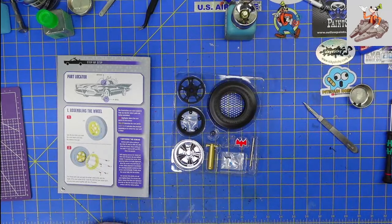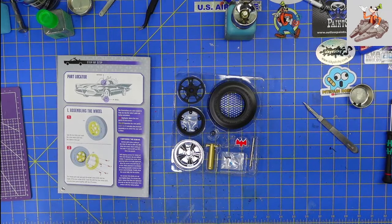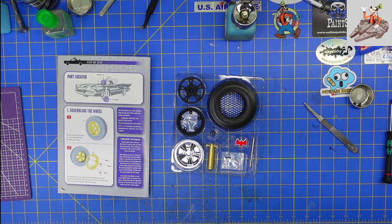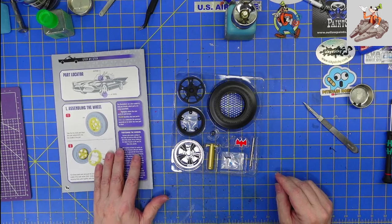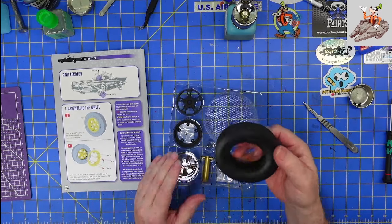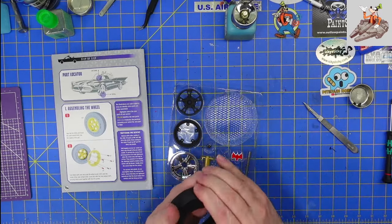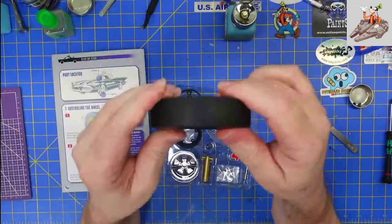So let me set that aside. And the first thing, like I said, the first thing we do is we assemble the wheel. You take the tire out and I have read, wow.